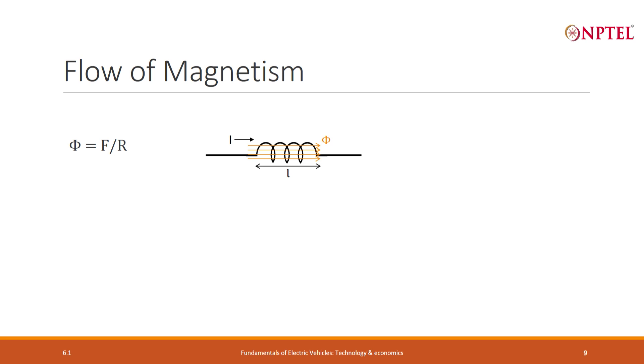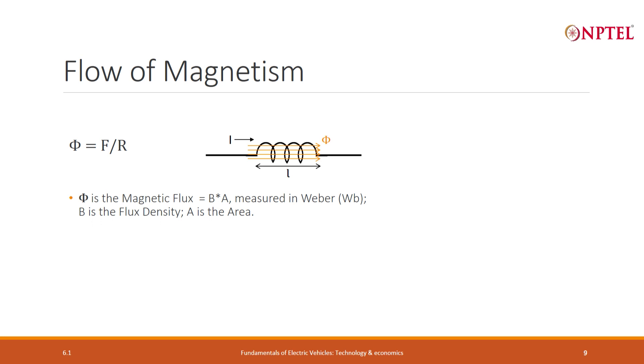We denote that by the term F, and the flux that is flowing is denoted normally by the Greek alphabet phi. The magnetomotive force F is nothing but the current multiplied by the number of turns, and this flux is flowing through a medium just like we saw water flowing through a pipe or current flowing through a wire.